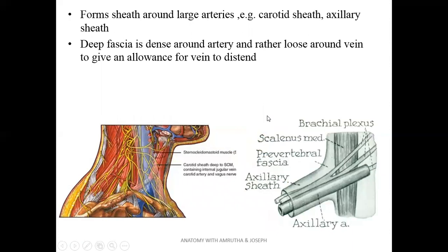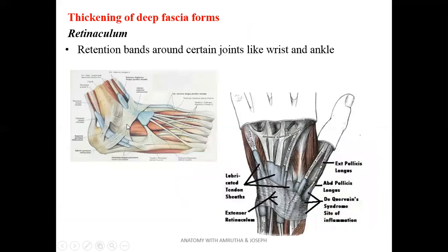Deep fascia also surrounds large arteries and veins. For example, in the axilla it covers the axillary vessels, and in the carotid region of the neck it forms the carotid sheath. When it covers veins, the deep fascia is loose to allow distension. Deep fascia also thickens in some parts of the body to form retinacula — as in the extensor retinaculum of the ankle and the extensor retinaculum of the wrist — to support the structures passing deep to them.